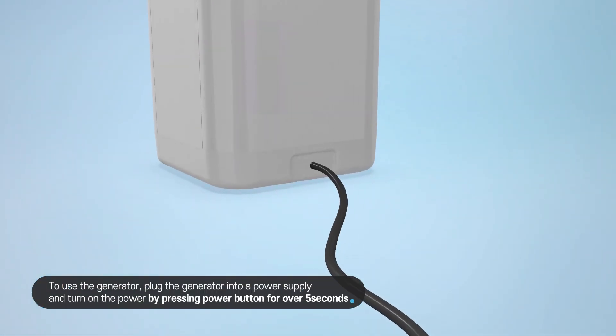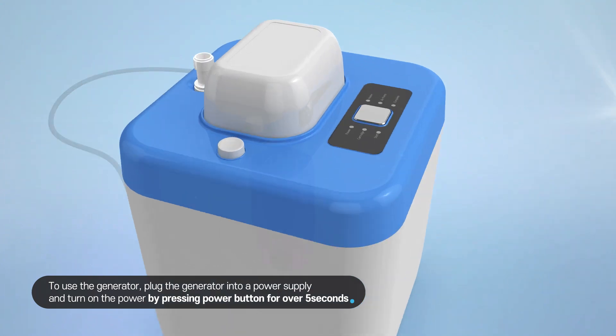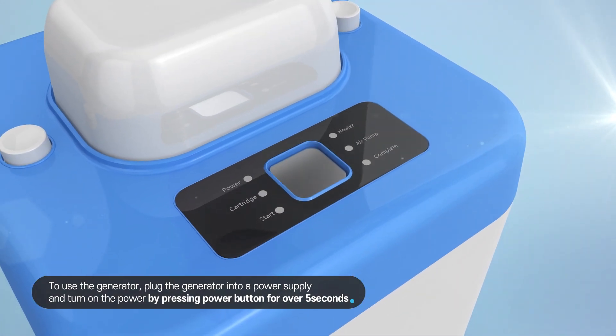To use the generator, plug the generator into a power supply and turn on the power by pressing the power button for over five seconds.